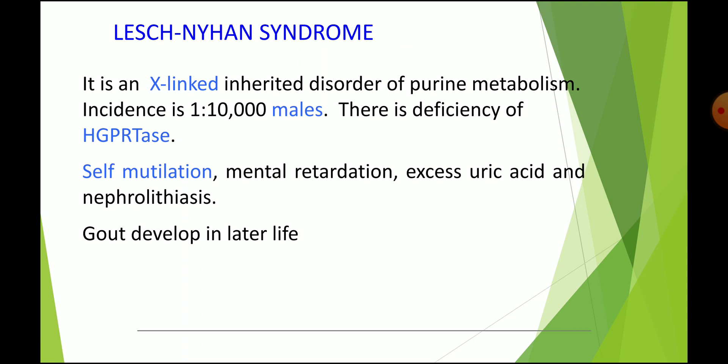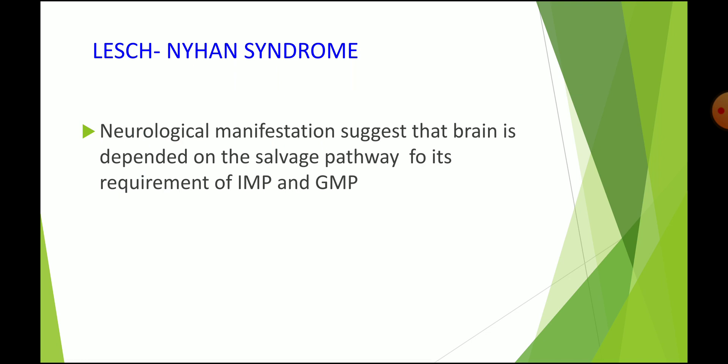Hyperuricemia occurs because PRPP is not used for salvage and leads to excess formation of uric acid, causing nephrolithiasis (renal stones) and sometimes kidney failure. Gout may also develop due to hyperuricemia. The neurological manifestations confirm that the brain is dependent on the salvage pathway for its requirement of IMP and GMP, which is why mental retardation occurs in Lesch-Nyhan syndrome.